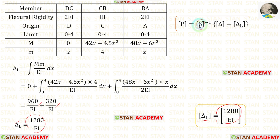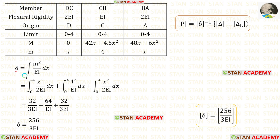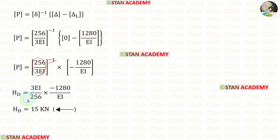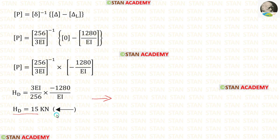Now we find the delta matrix using the formula: integration of m² / EI dx. Applying the values of m and integrating gives three values; adding them gives delta. Applying all values and simplifying (cancelling EI terms), we calculate HD. HD gives a negative value, meaning our assumption was incorrect — HD is actually acting towards the left side, not the right.